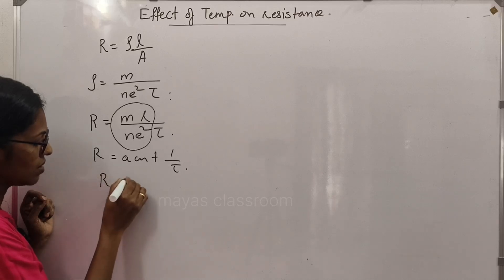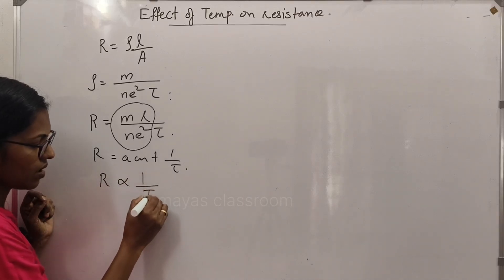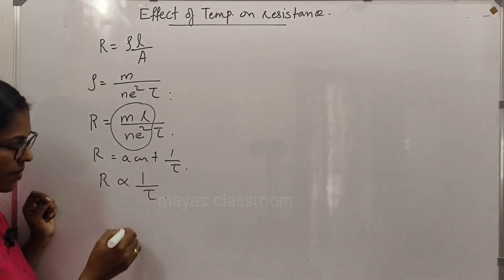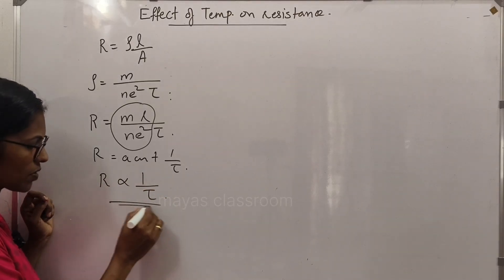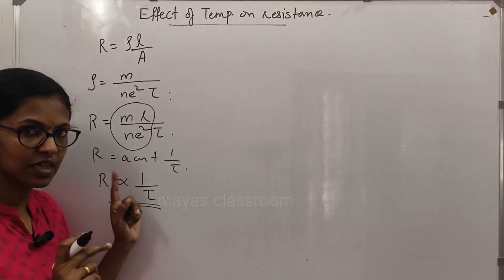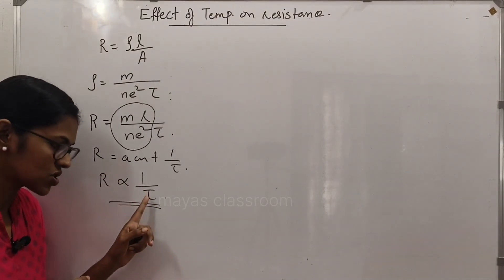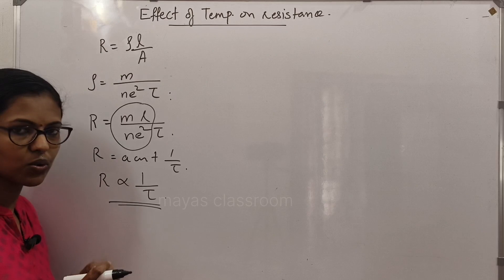R is inversely proportional to tau, the relaxation time. If the relaxation time decreases, the resistance will reduce.